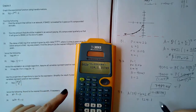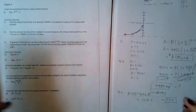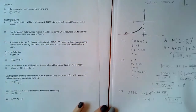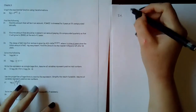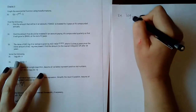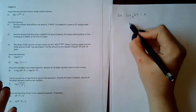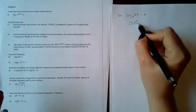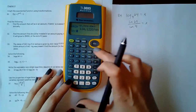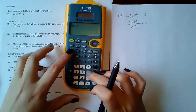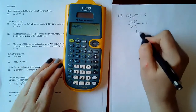Number 34: solve log base 4 of 64 equals x. Since x is already isolated, I change the base and type it into the calculator: ln(64) over ln(4), and I get x equals 3. That is correct.